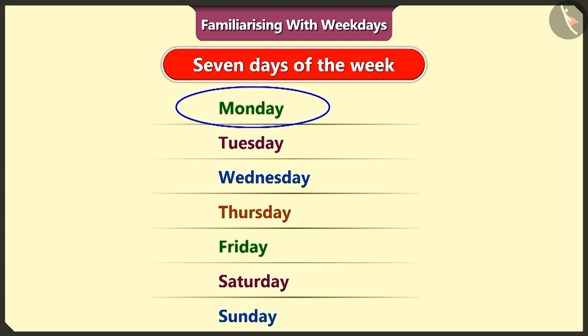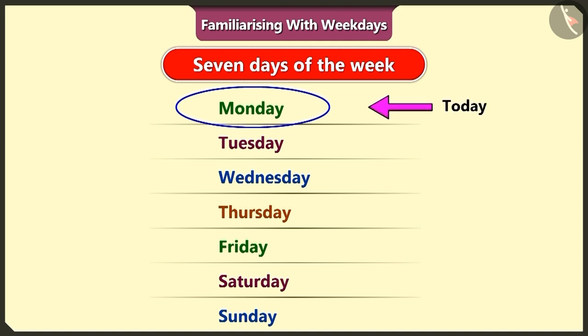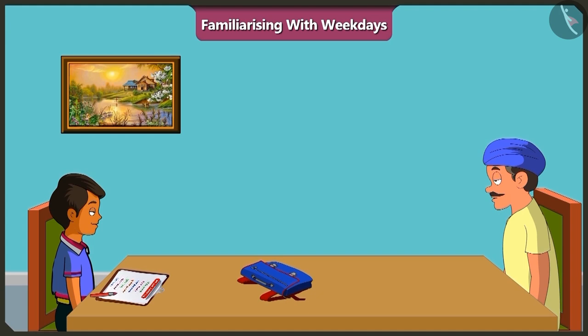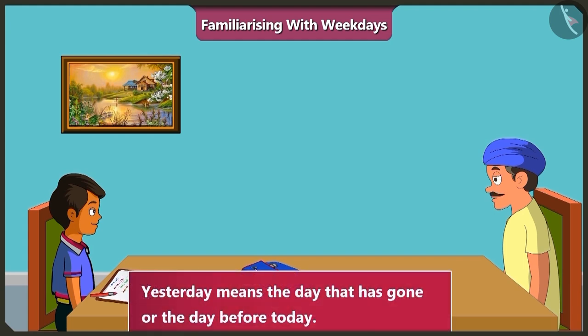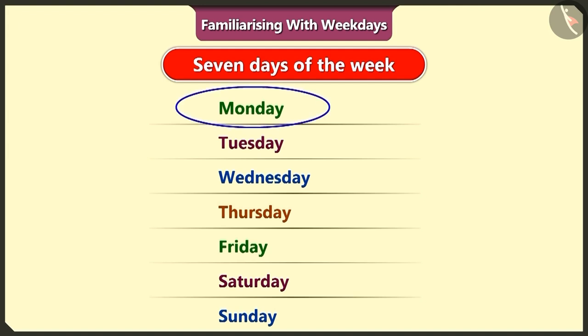Look, we will circle Monday and write 'today' next to it. Yesterday was which day of the week? Yesterday means the day that has gone, or the day before today. Today is Monday, so the day before that was Sunday. Correct. Now mark a circle on Sunday and write 'yesterday' next to it.